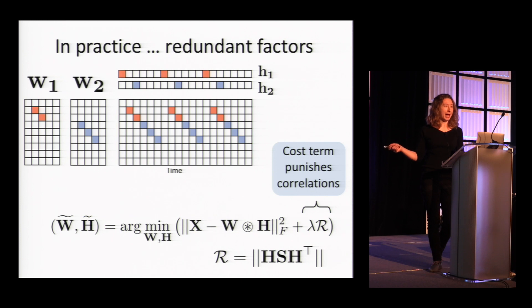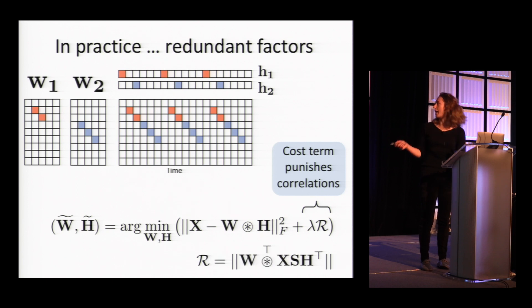We thought maybe we could add a smoothing term to the H's before we took the correlation matrix, so then we could be sensitive to correlations at a slight temporal offset. This almost worked but not quite, because what would happen is that we'd get two different factors where the patterns looked very similar. They would just explain different instances of the same sequence in the data. So that doesn't quite work.